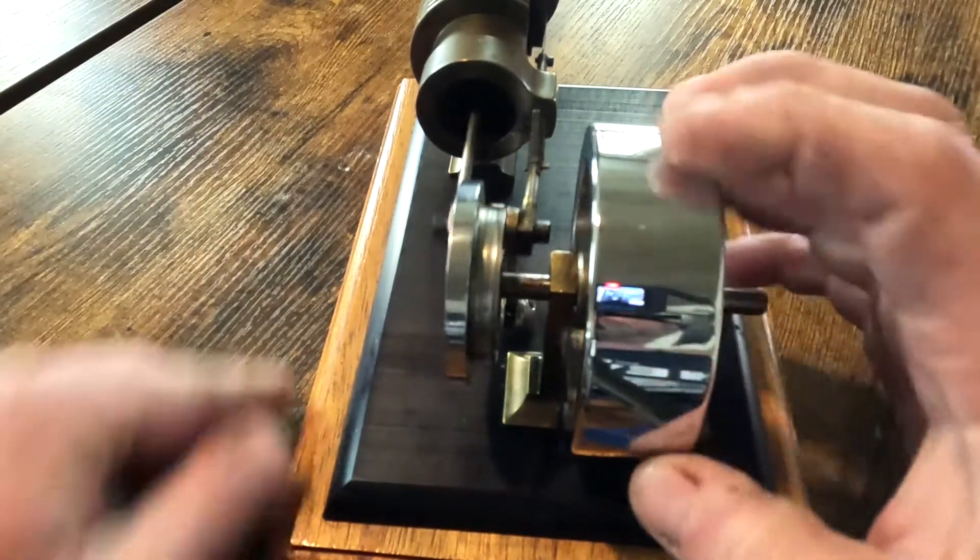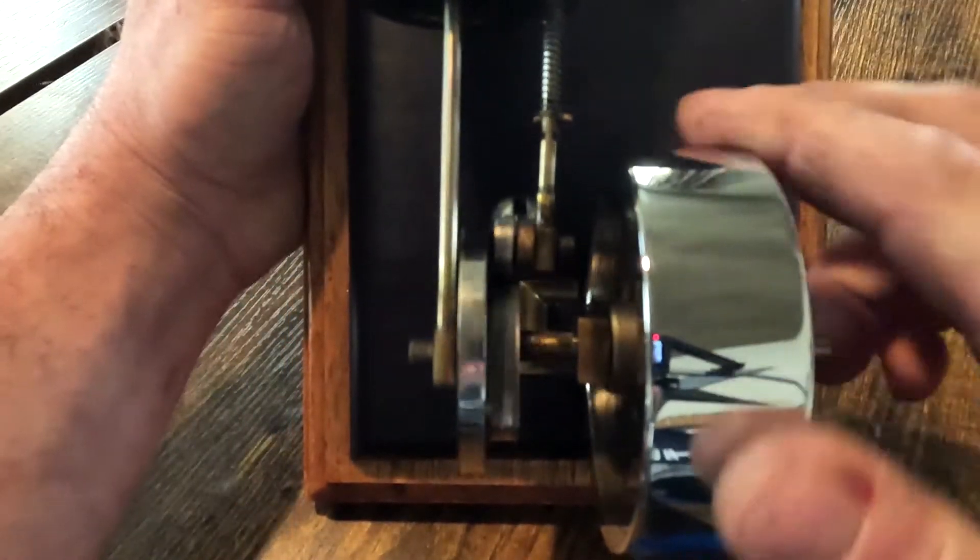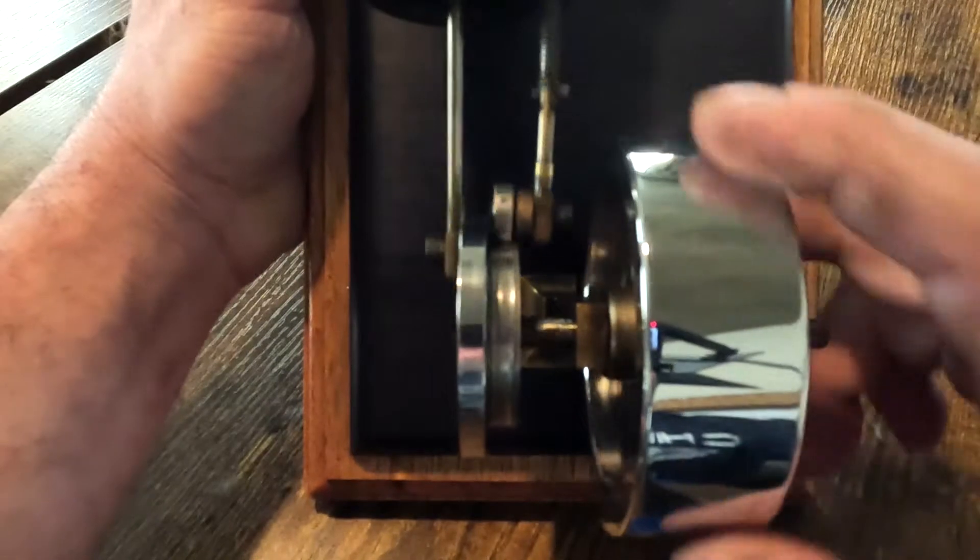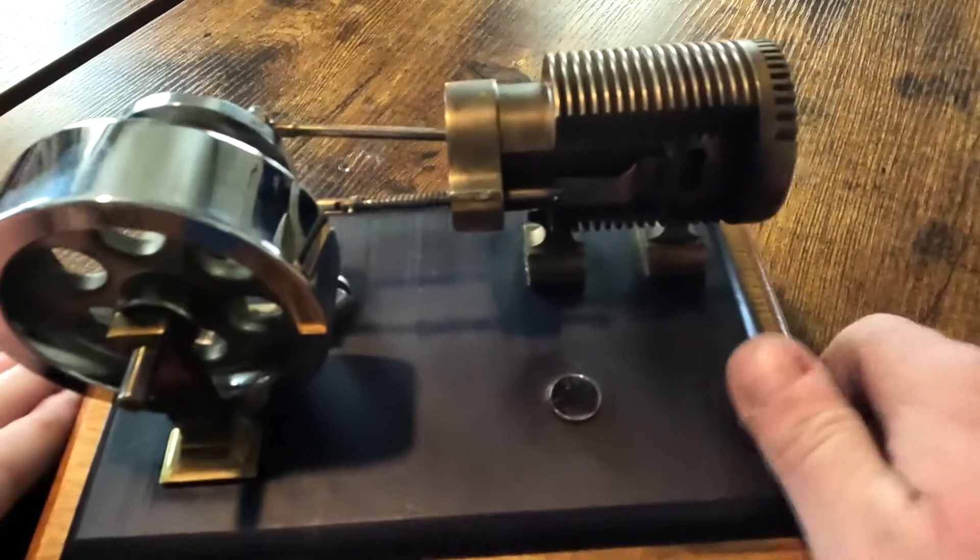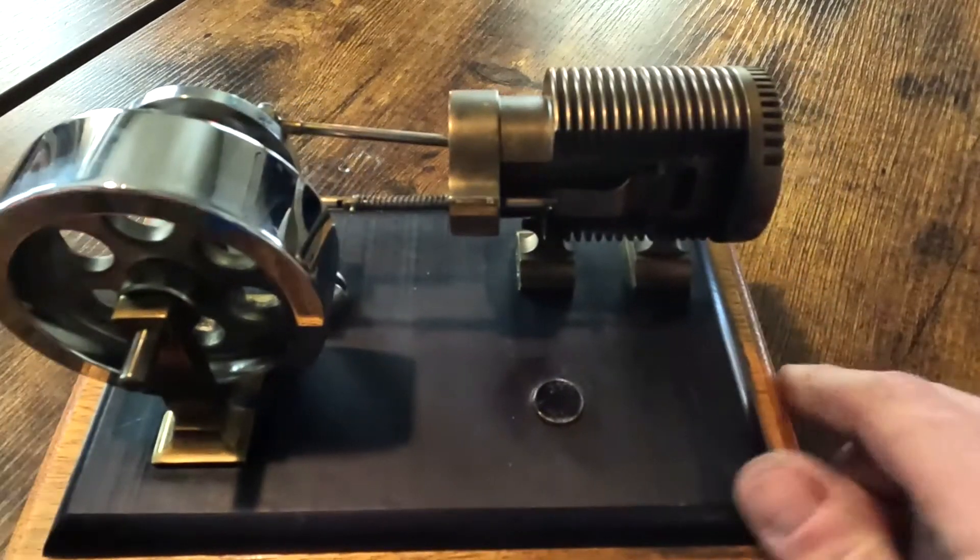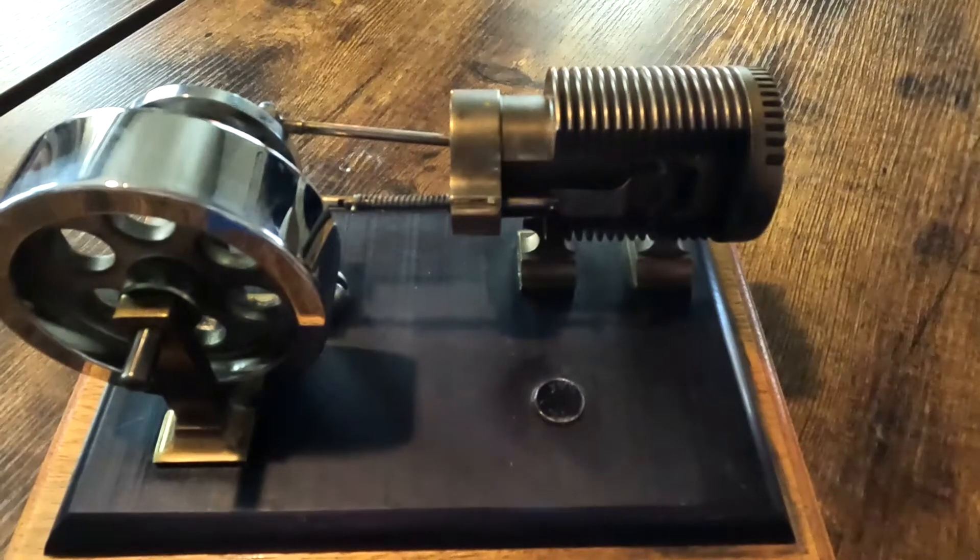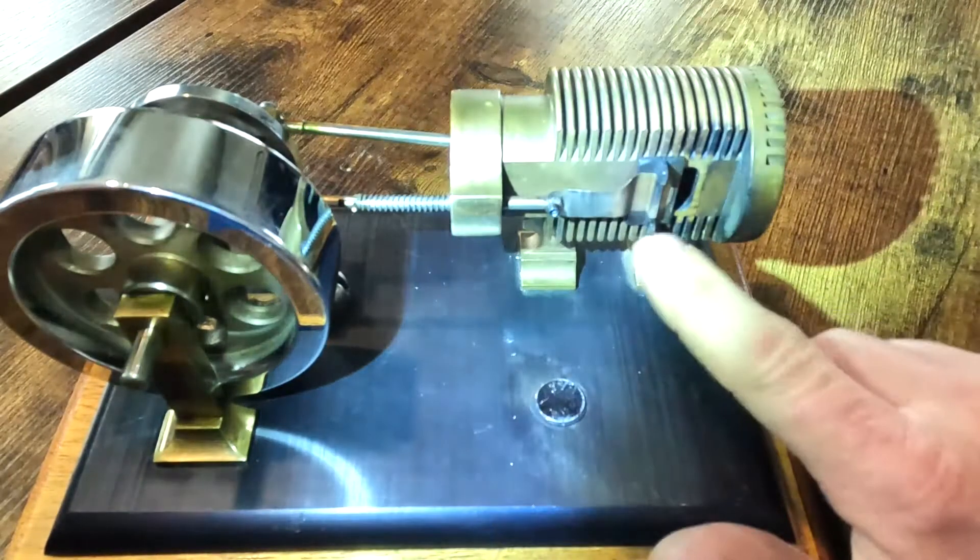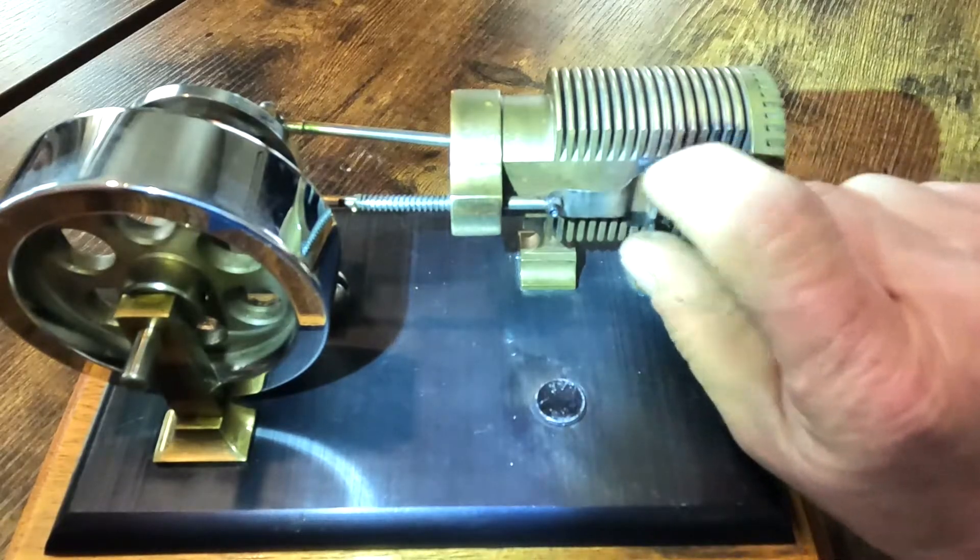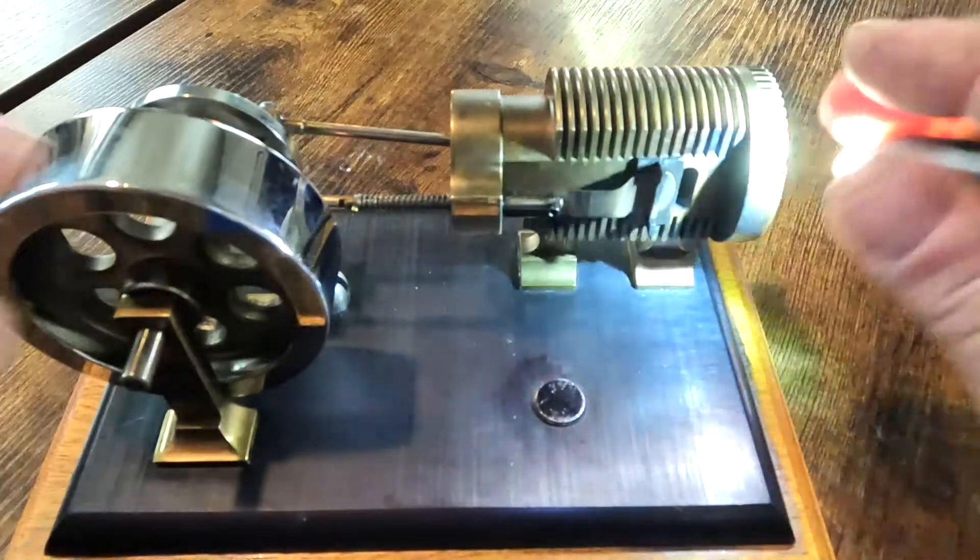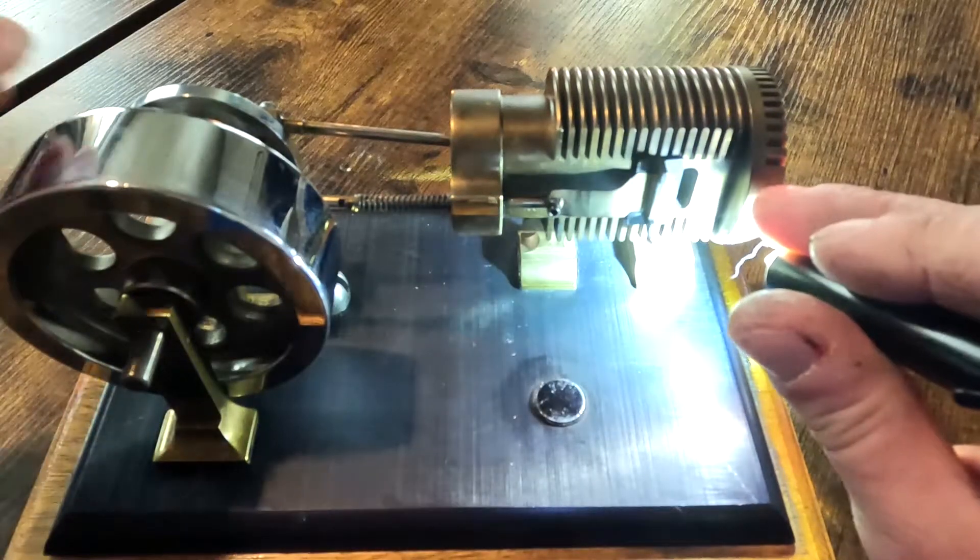You can see how that runs our valve rod down here and much like everything else in life, timing is everything on these. The way they operate is they've got a slide valve here. I'll get you a better view of that. They've got a slide valve here that's spring-loaded to hold it up against the machine face and this is our opening into the cylinder itself.